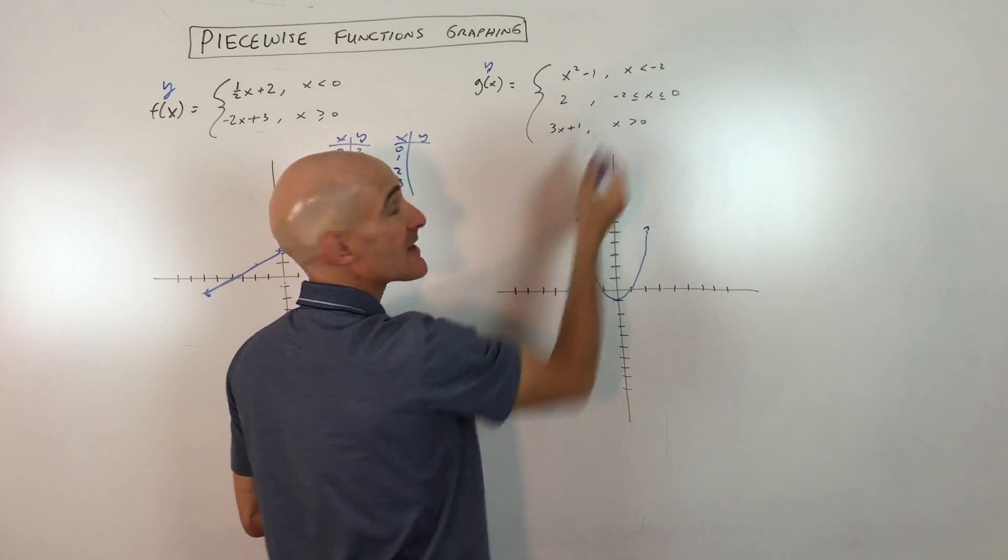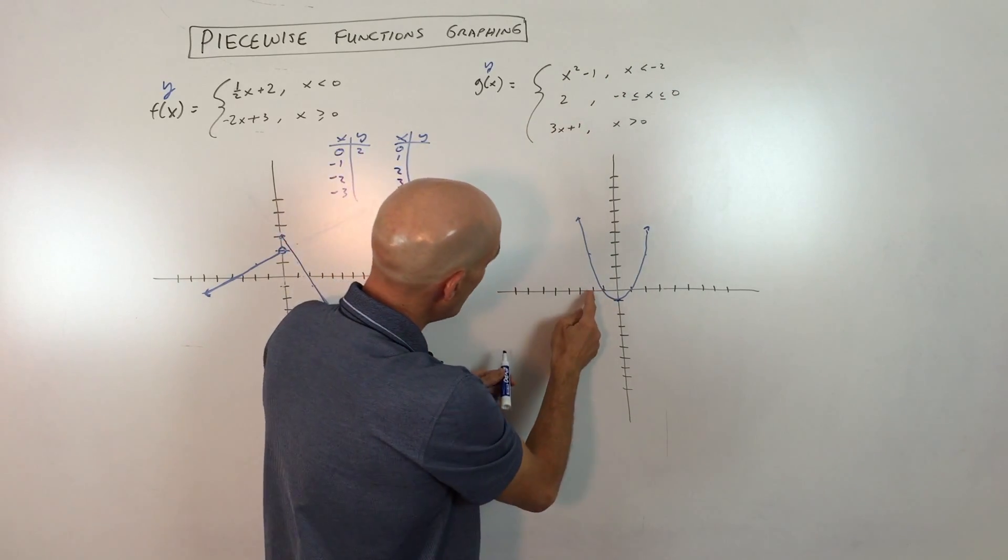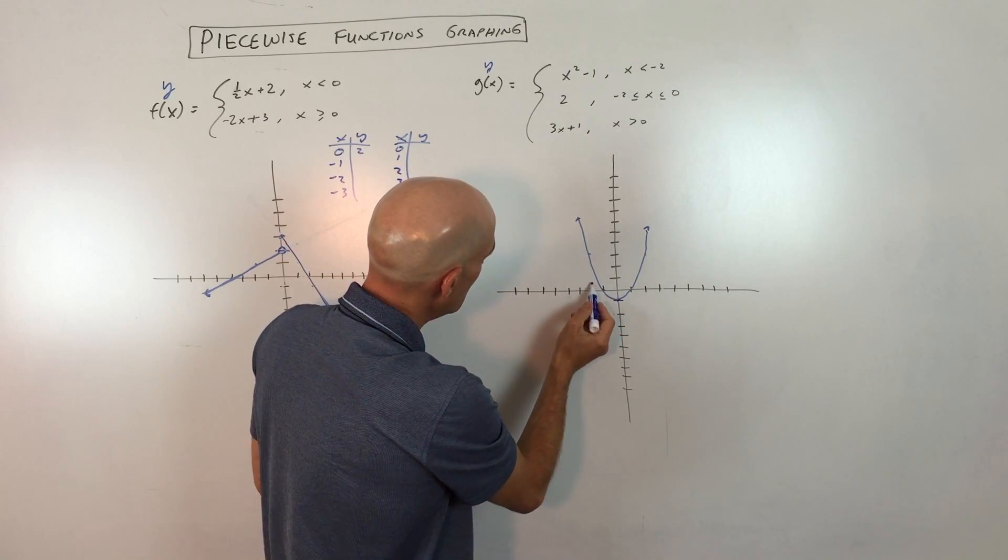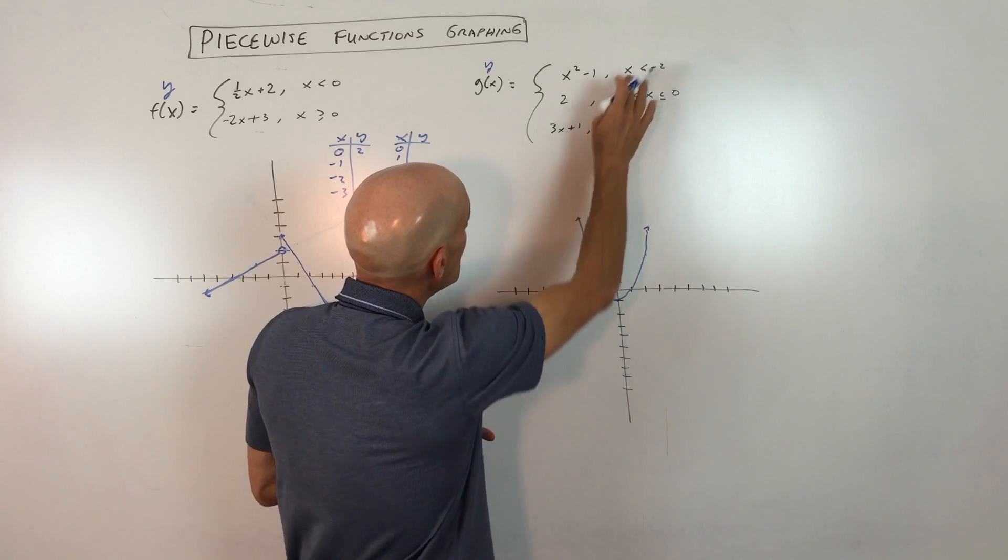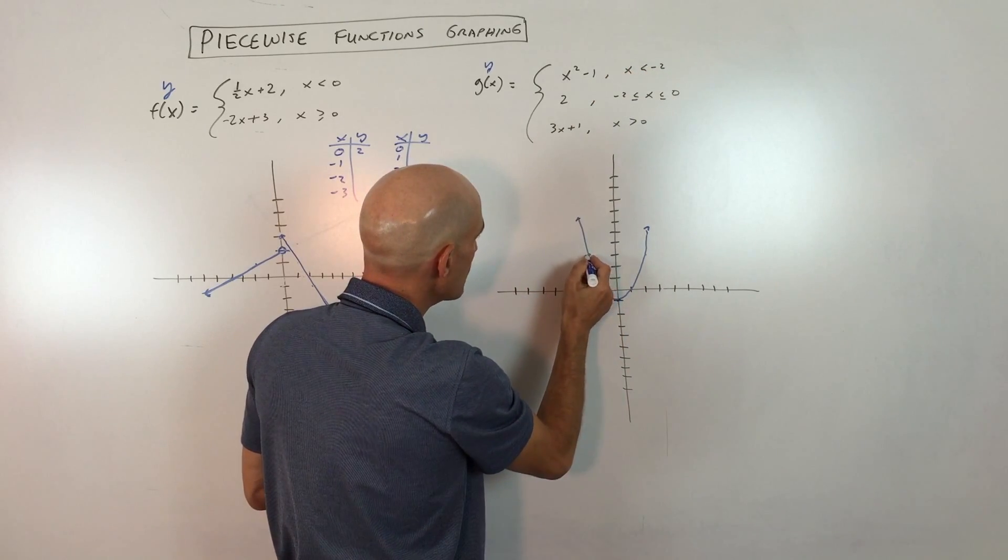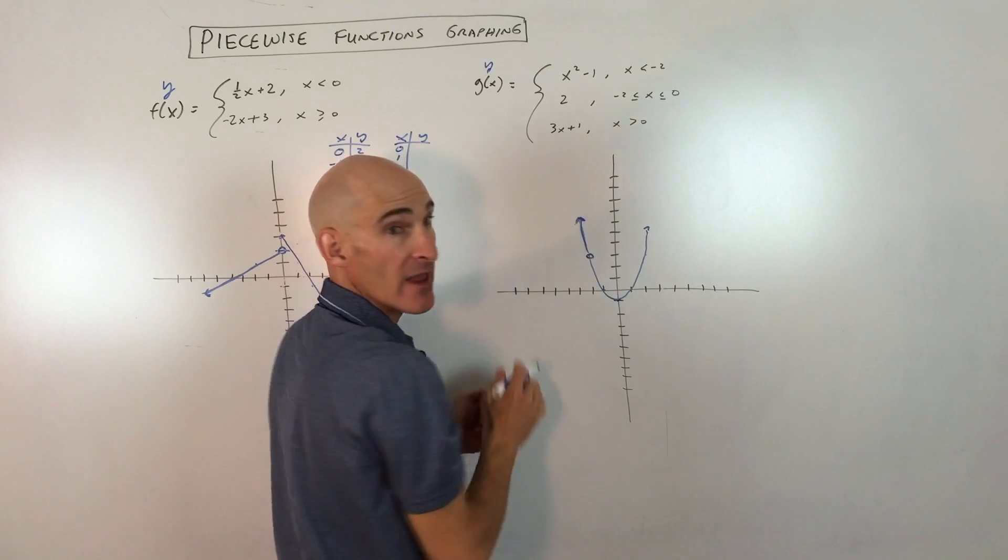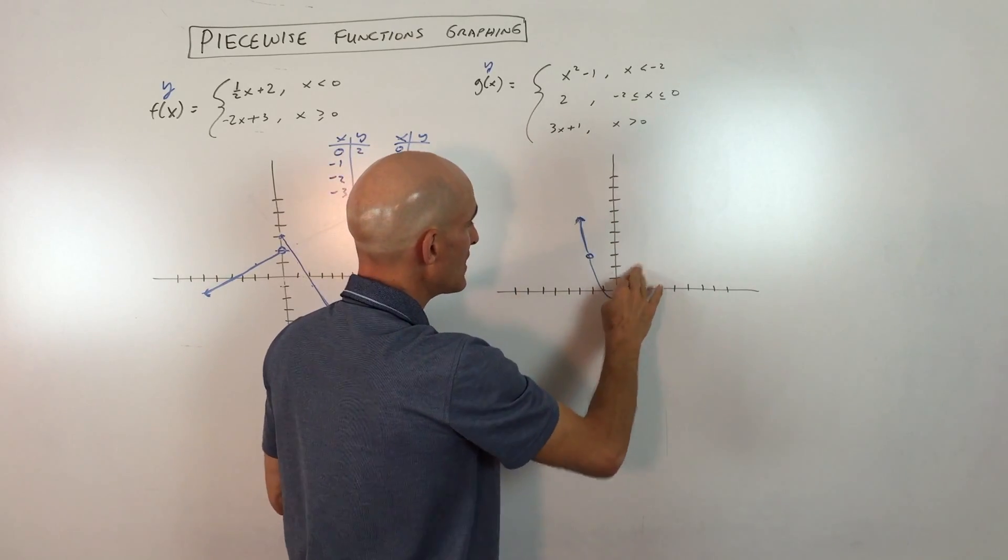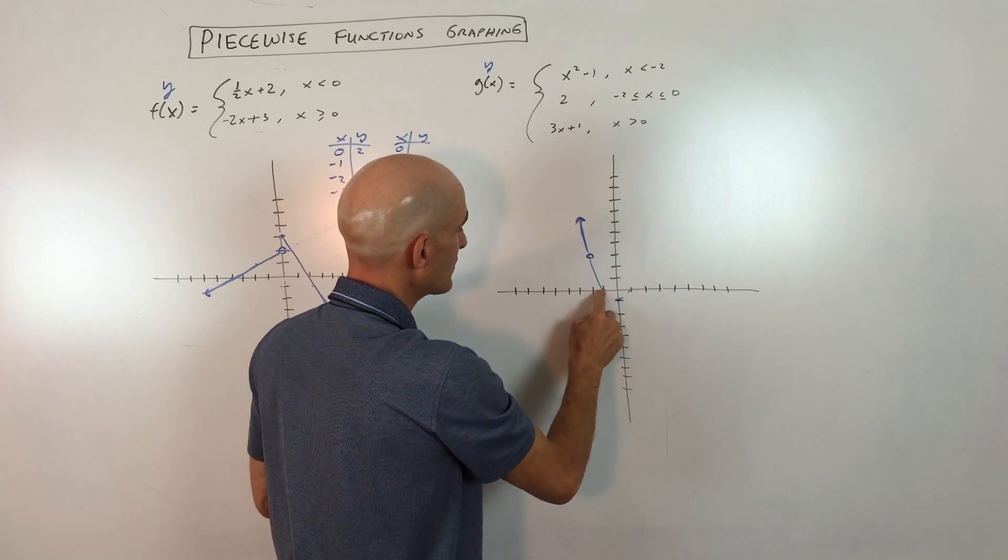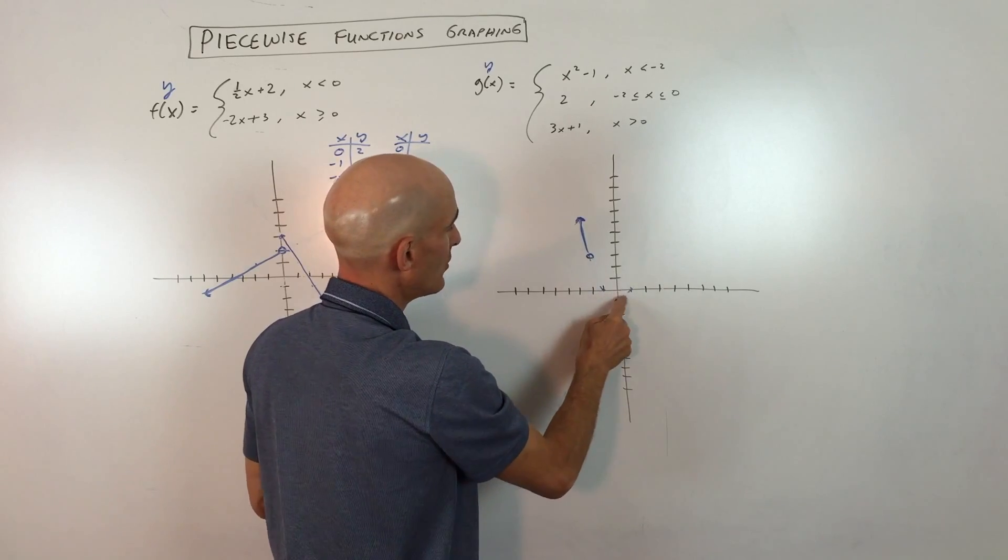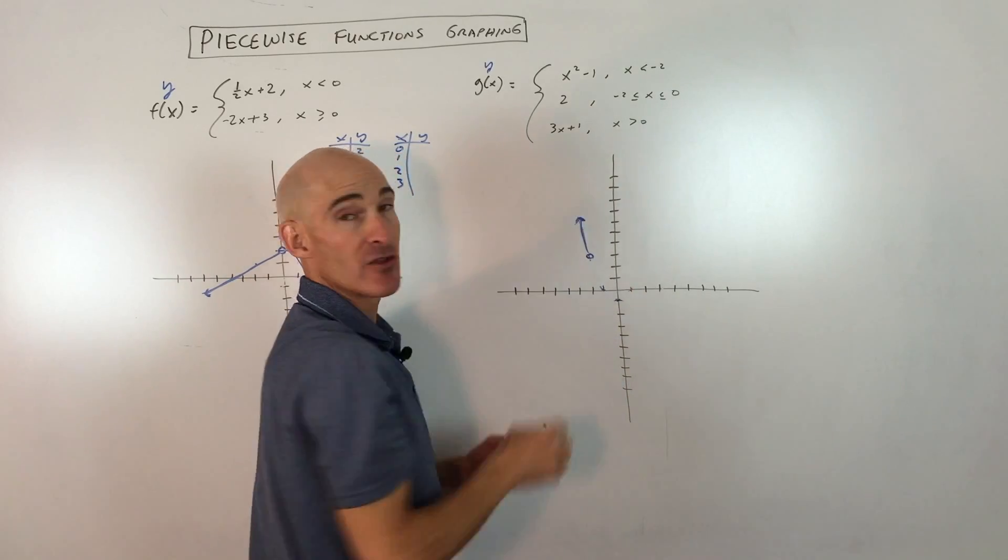But see how it says when x is less than negative 2? So if I go over here to negative 2 and I go up to the graph, less than but not equal to, so this is actually going to be open, less than, meaning when we're going to the left. So all of this we don't need. I'm going to go back and I'm going to erase it. So we're just on that part of the graph.